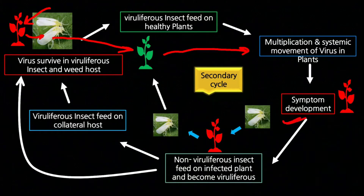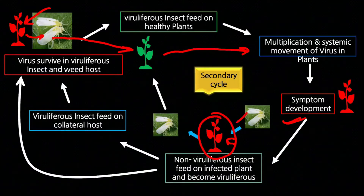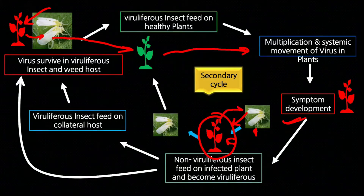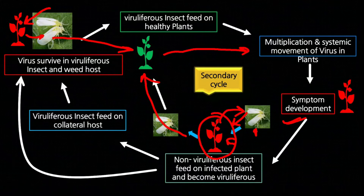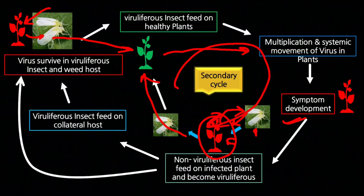दूसरा case यह भी हो सकता है कि whitefly पहले infected weed host में feed करे, वायरस acquire कर ले, फिर दूसरे plant को feed करे और वायरस transmit करे। वायरस plant के system में multiply और move करता है — हमें symptom दिखाई देता है जैसे leaf curling और dwarfing। इस प्रकार पूरे खेत में वायरस फैल जाता है — इसे secondary infection cycle कहते हैं।